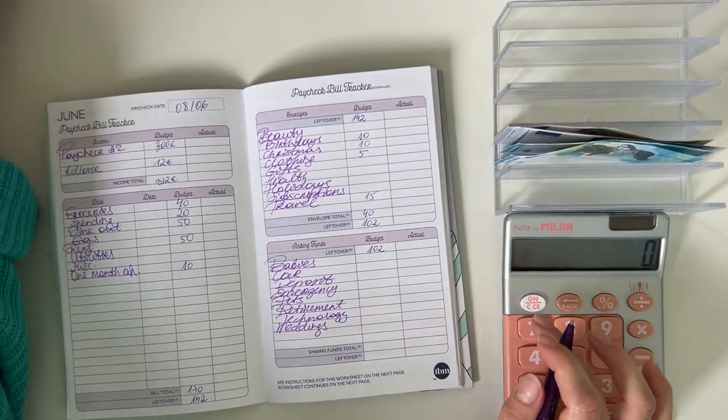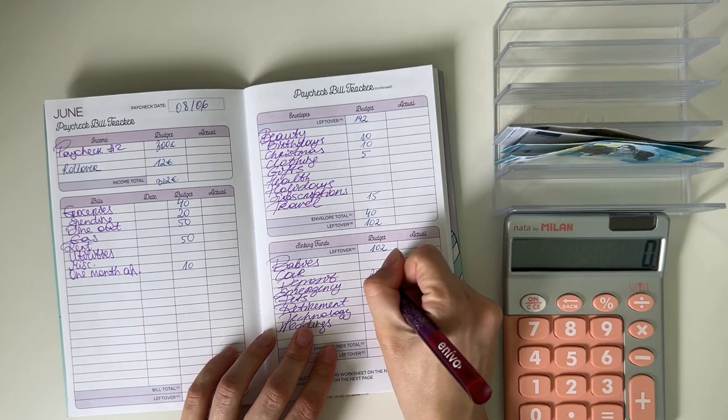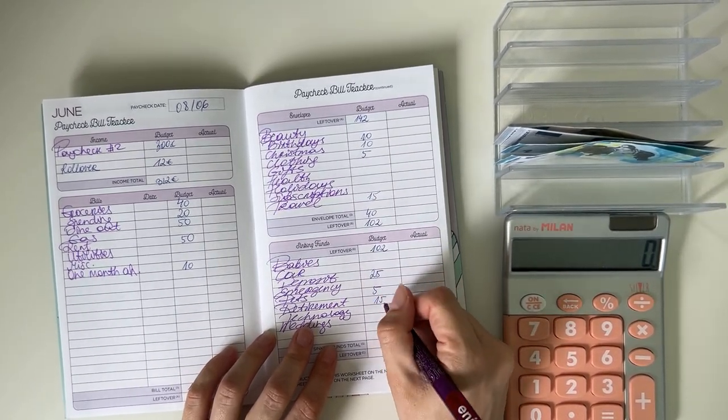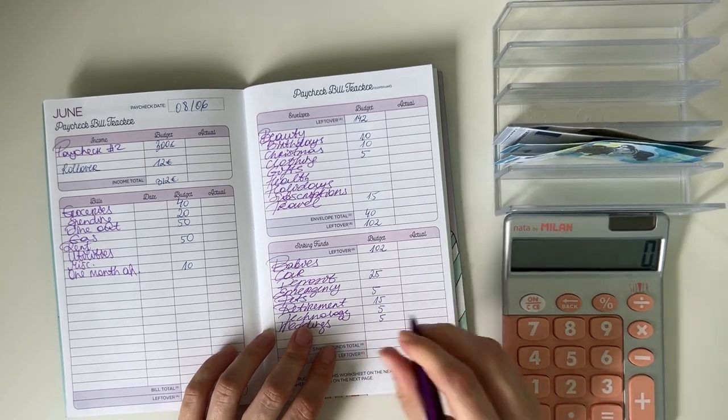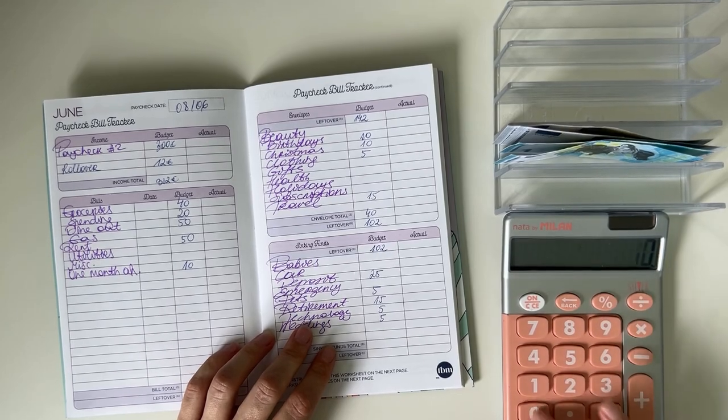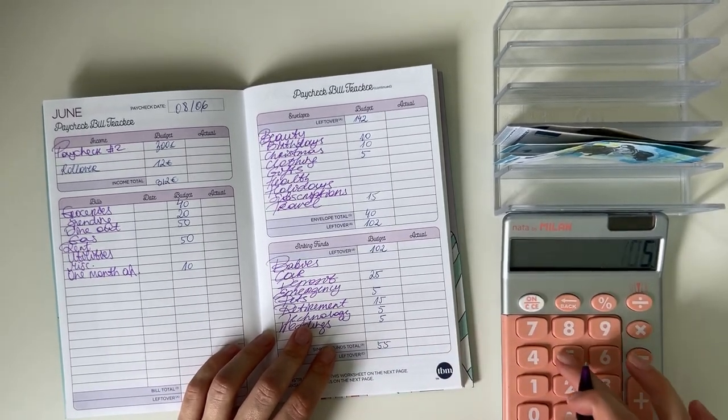We have 25 going into deposit, 5 going into pets, 15 in retirement, and 5 in technology and weddings. So in total for long-term sinking funds we have 55, so 102 minus 55 is 47.